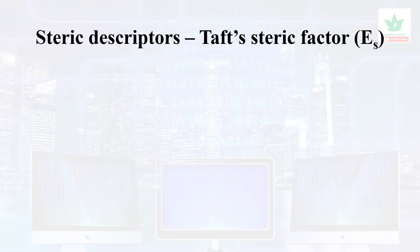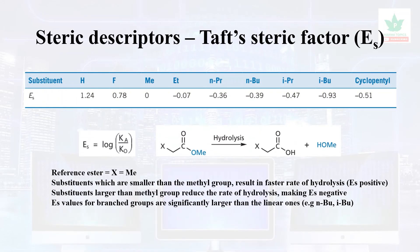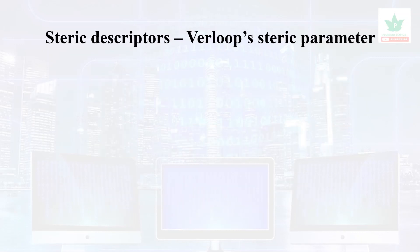Next are steric descriptors — Taft's steric factor (Es). In substitution, methyl group represents smaller substitutions. Hydrolysis in the ester: the methyl group gives a negative Es value. Branched compounds versus linear compounds give different Es values. This is one example of Taft's steric factor.